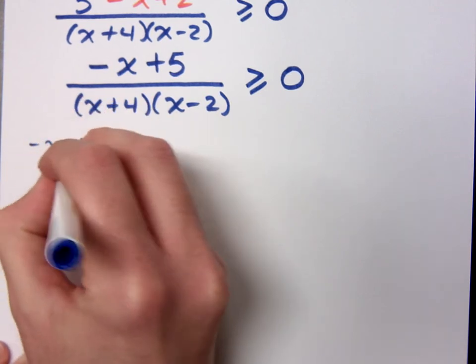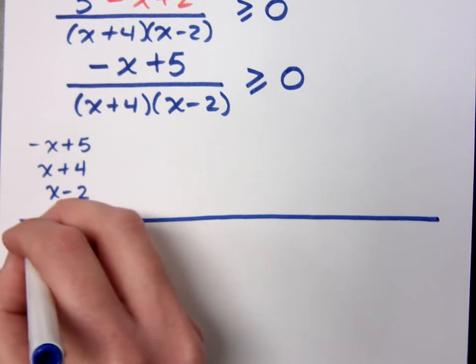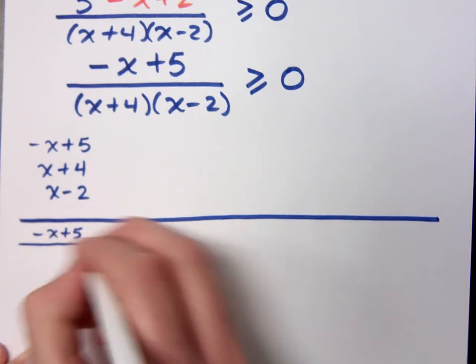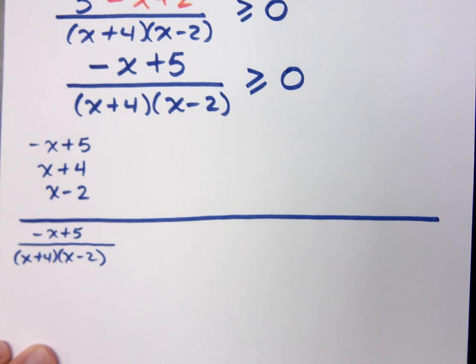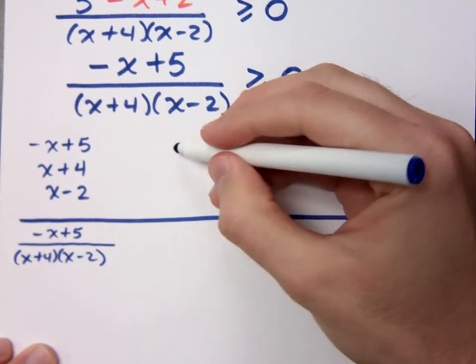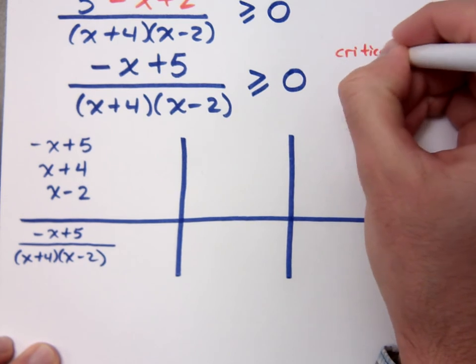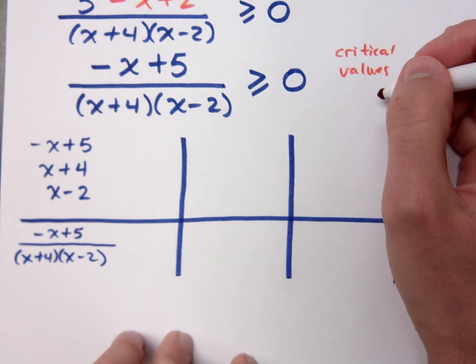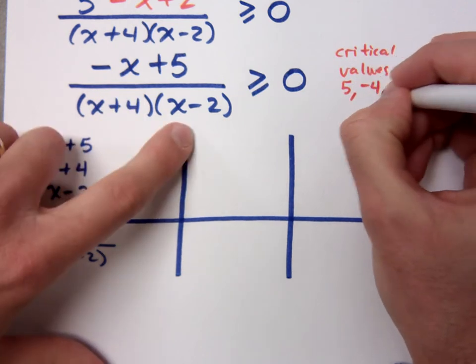Notice that I have three factors here. I've got the factors in the numerator, and these two guys in the denominator. So when I write these factors out, negative x plus 5, x plus 4, and x minus 2. And then I look at this expression as a whole, negative x plus 5 over x plus 4, x minus 2. How many critical values do you see that I'm going to have here? I'm going to have 3.